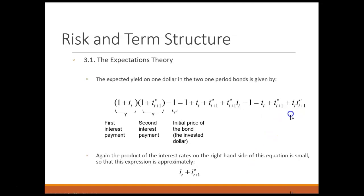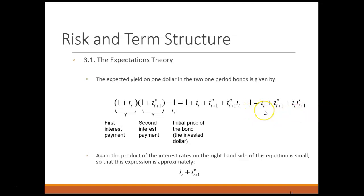By contrast, what do you earn if you purchase a one-year bond and reinvest the proceeds? On your initial dollar you earn interest, then you reinvest at whatever you expect tomorrow's one-year interest rate to be. Expanding this expression and ignoring the compounding cross term, if you buy two one-year bonds the expected interest earned is the one-year interest rate today plus the expected one-year interest rate tomorrow: I_T plus I_{T+1}^E.